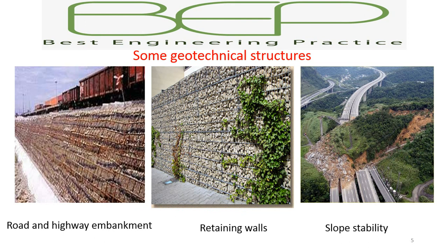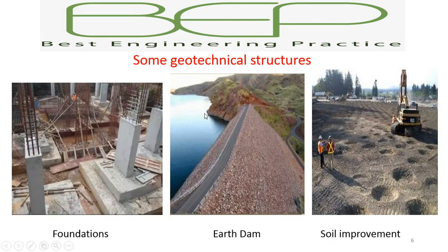Here are some examples of geotechnical structures. Here we have a road and highway embankment. Here we have a retaining structure. Here we have slope stability — you can see a landslide and how to mitigate this kind of phenomenon. Here we have foundations, earth dams, and soil improvement, to achieve better characteristics of soil. So you have understood that geotechnical engineering is about all of these. In this series, we are going to see step by step how to understand the behavior of soil and how to design all those structures.